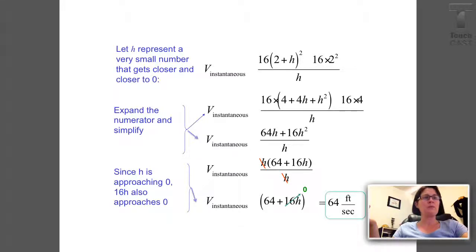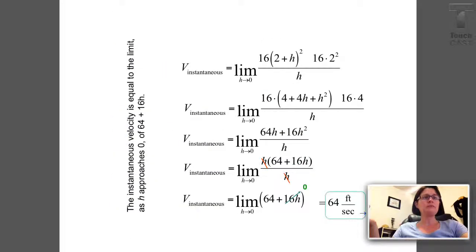Here's what it looks like. The same problem. I can say that the instantaneous velocity is the limit as h approaches zero of that same function I had before: 16 times (2 plus h) squared, minus 16 times 2 squared, all over h. I can see in my slides that the minus signs aren't showing, but you can picture them there. So, this is limit notation. More about that in this section.